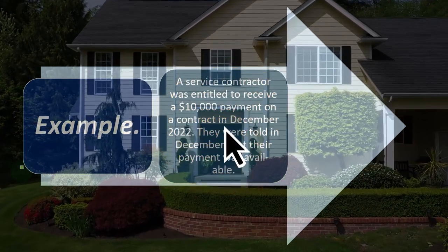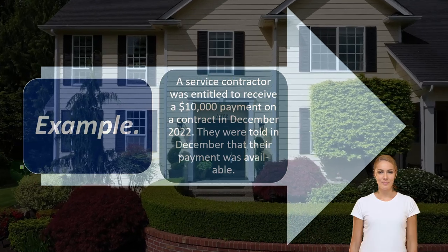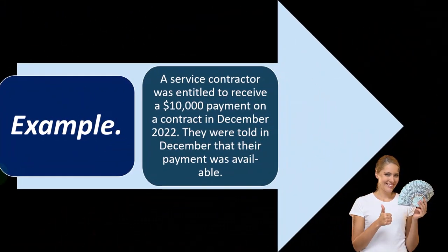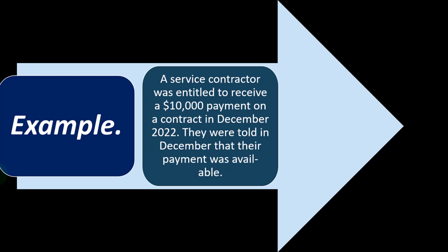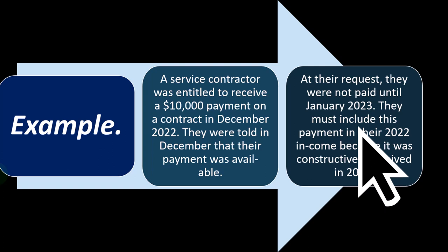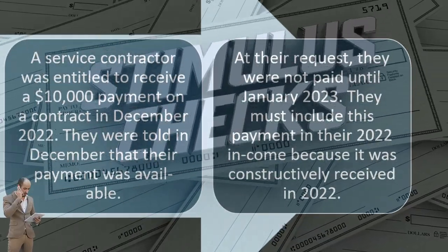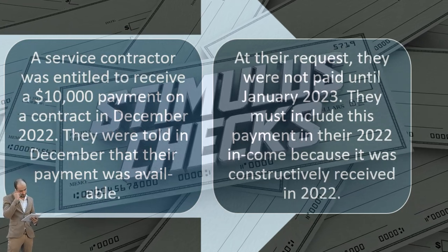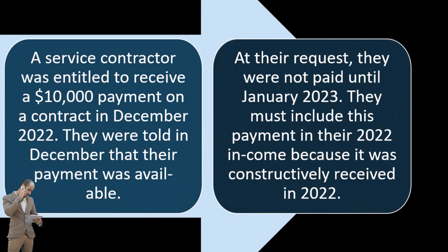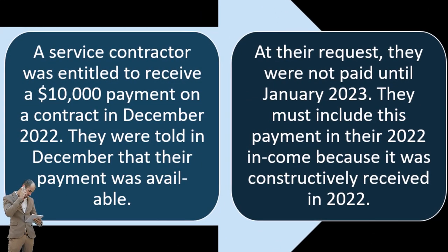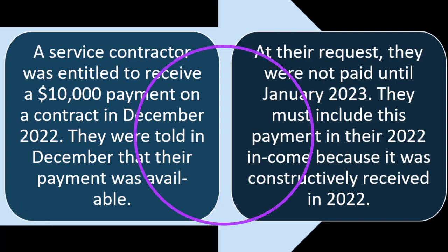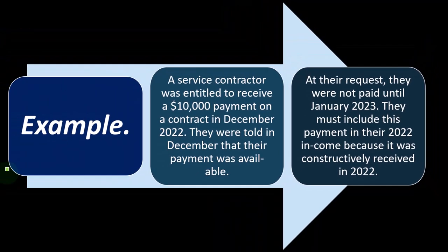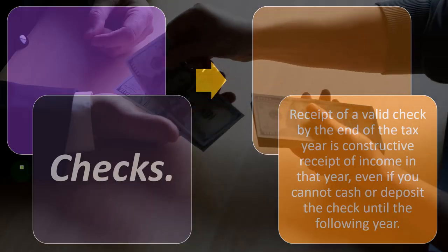Example: a service contractor was entitled to receive a $10,000 payment on a contract in December 2022. They were told in December that their payment was available, but at their request they were not paid until January 2023. Nothing was stopping them from being paid earlier — they told their customer not to pay. They had complete access to it. So they must include this payment in their 2022 income because it was constructively received in 2022.